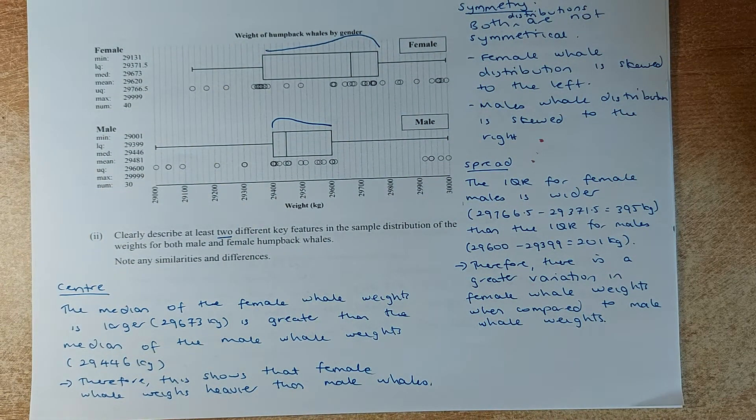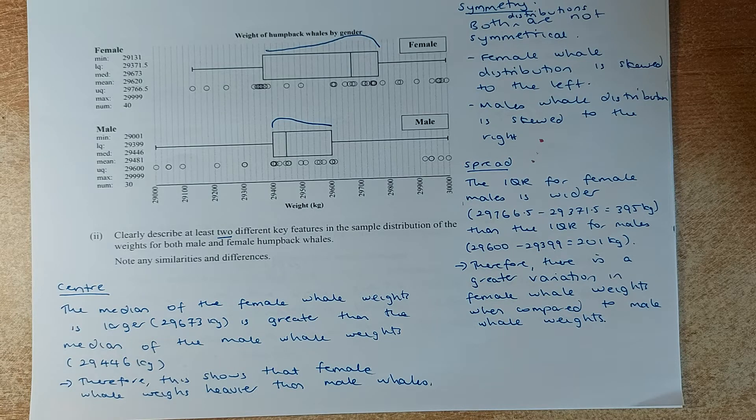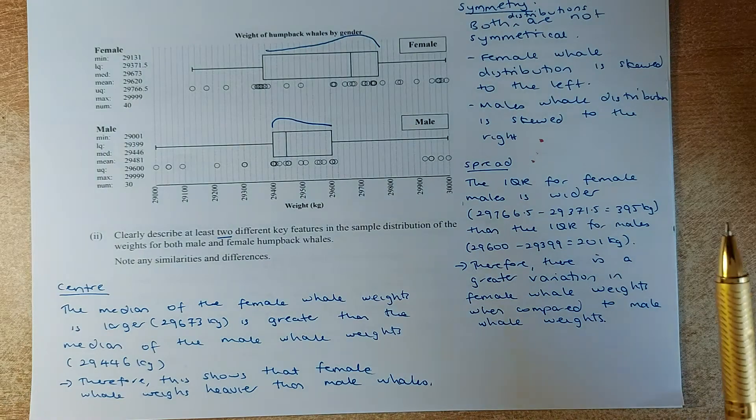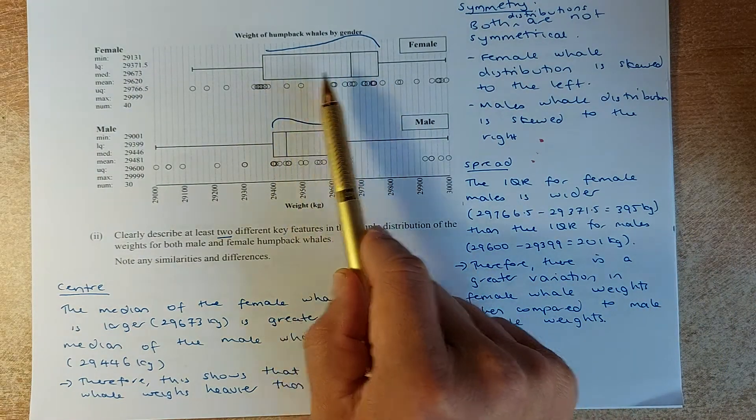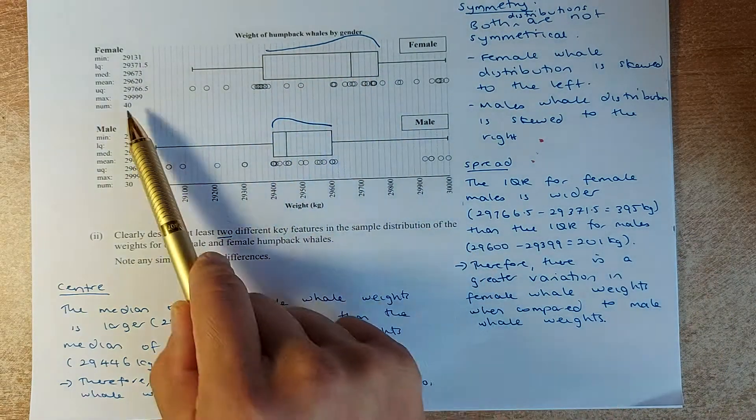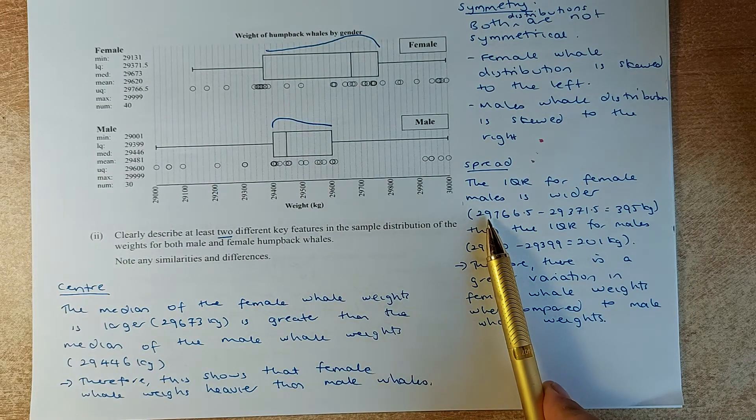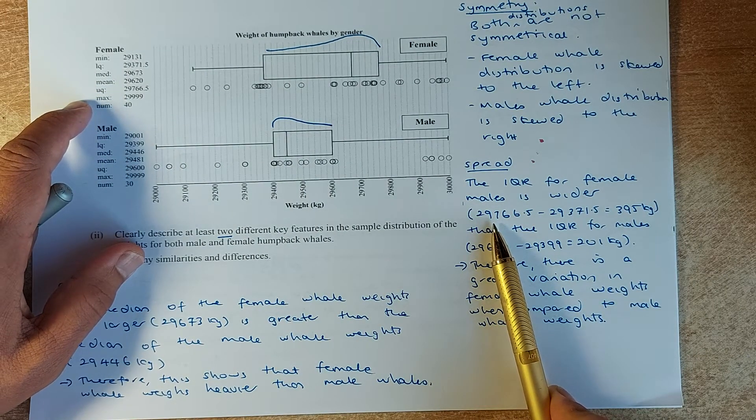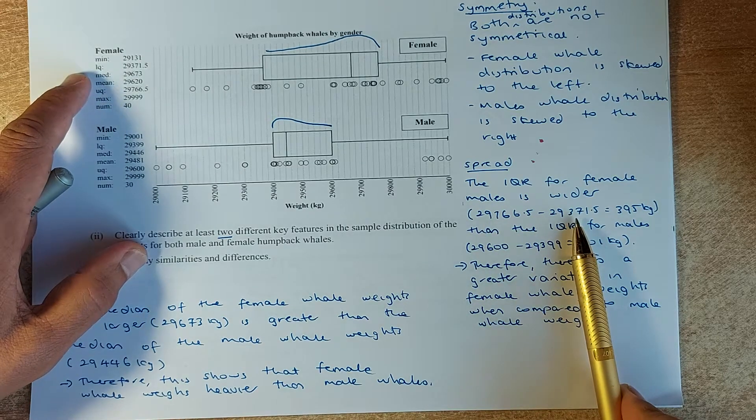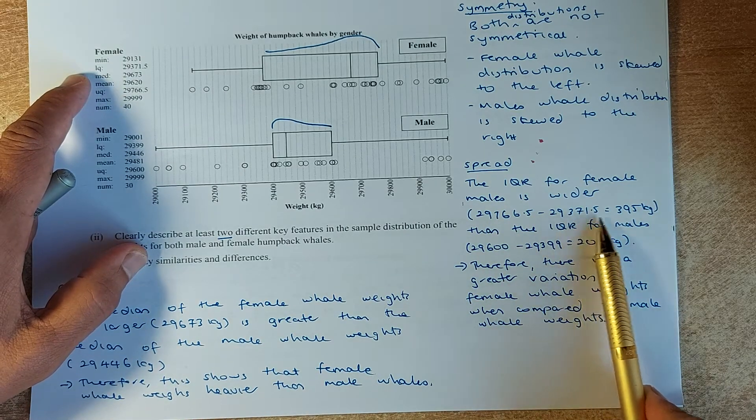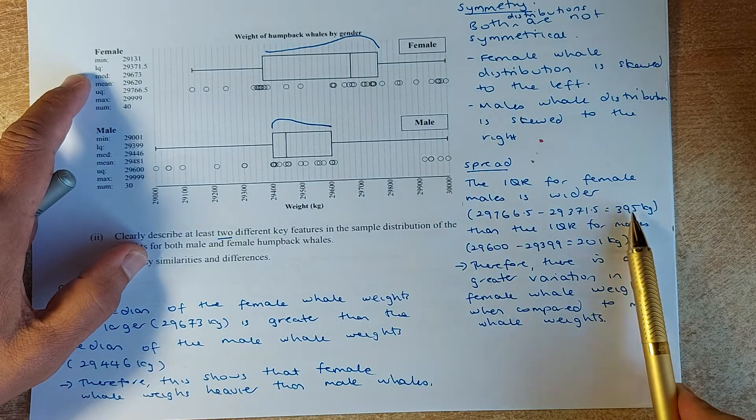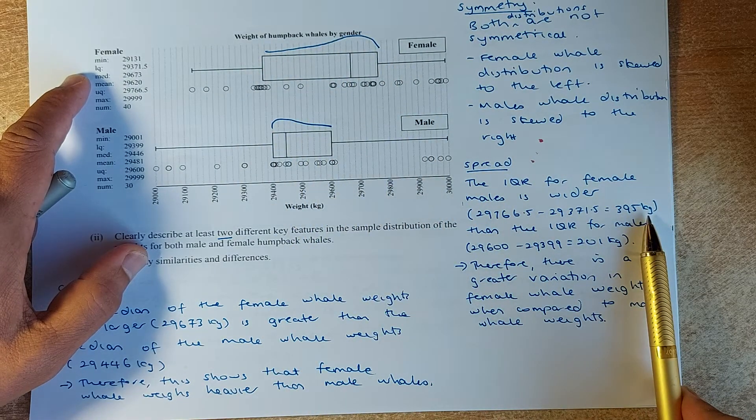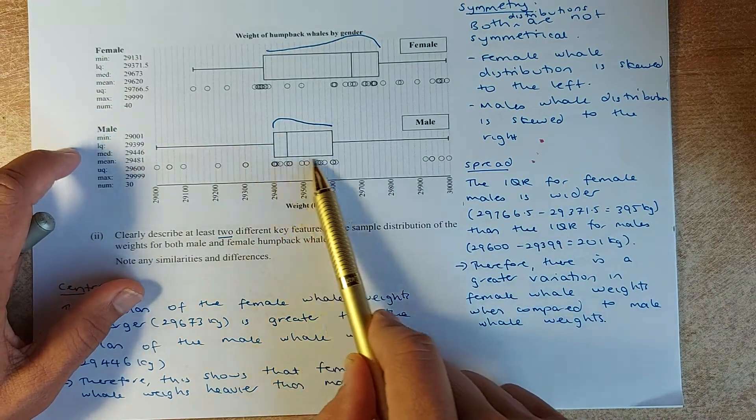If they ask for two, if you answer two, you'll get a merit. The second is the spread. We have seen earlier in the first question, the spread for the female. In this case, we put the numbers. The upper quartile is 29,766.5 minus the lower quartile is 29,371.5, and the interquartile range or the box is 395 kg.